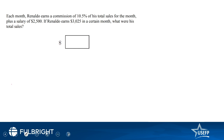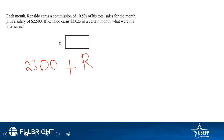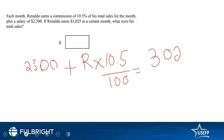First question: each month Rinaldo earns a commission of 10.5% on his sales for the month, plus a salary of $2,500. If Rinaldo earns $3,025 in a certain month, what were his total sales? Rinaldo earns his salary plus a portion of the sales. Let's say the total sales he makes is R, so 10.5% of R plus 2,500 equals his total earning of 3,025.